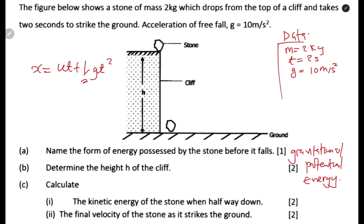Since we are looking at gravity, initial velocity is zero. So zero multiplied by time makes that term zero. We are remaining with X = ½at². Since we are calculating height, X is vertical distance, so it becomes H = ½gt².